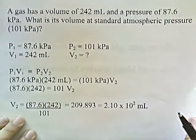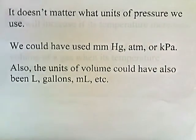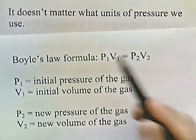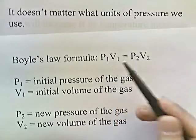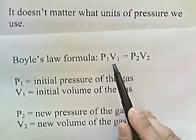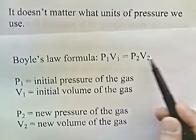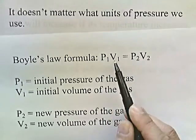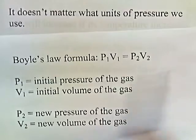It doesn't matter what units of pressure we use — we could use millimeters of mercury, atmospheres, or kilopascals. The units of volume could also be liters, gallons, or milliliters. The pressure units don't matter as long as you're consistent between the before and after. If P1 is in atmospheres, then P2 must be in atmospheres. If V1 is in liters, then V2 must be in liters. The units don't matter as long as you're consistent between the initial and final values.